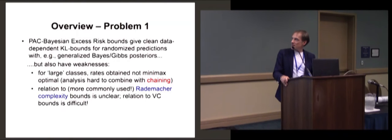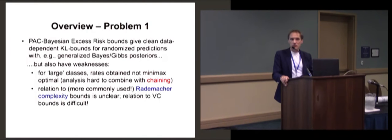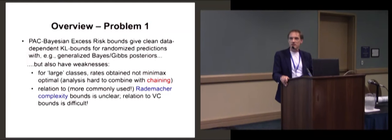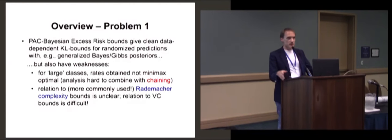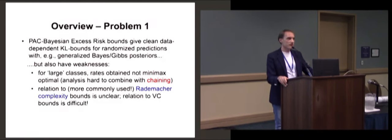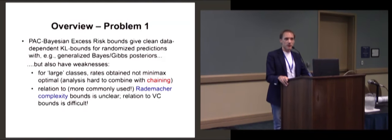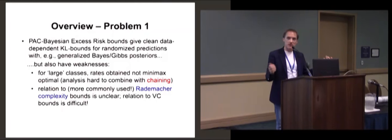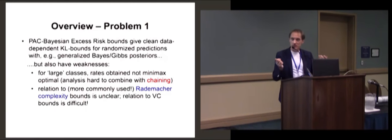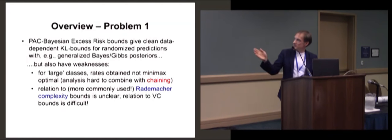These give clean bounds for randomized predictors, in particular for so-called generalized Bayesian and Gibbs posteriors. The bounds hold for any type of learning algorithm, but they will often be optimized if we take something very much resembling a Bayesian posterior. So there's already a bridge there.